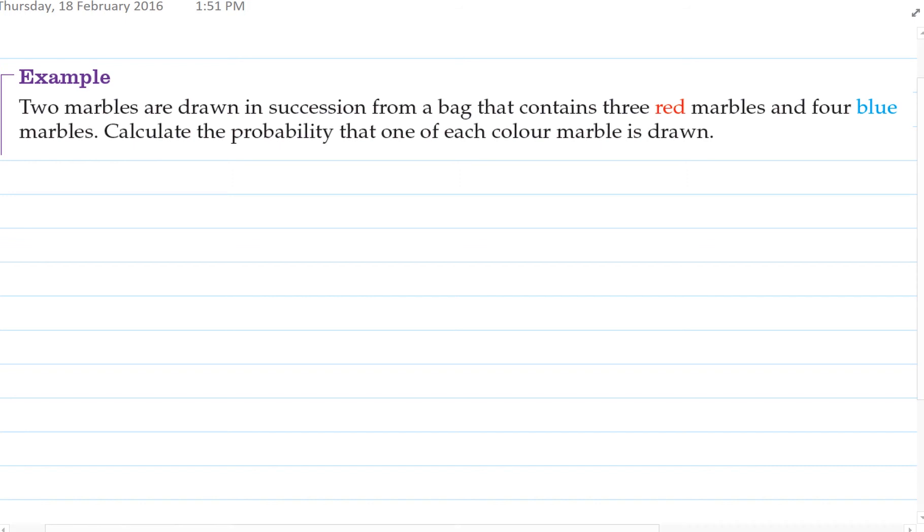So in this example, we're looking at two marbles being drawn from a bag that has three red and four blue. Calculate the probability that one of each color marble is drawn. So our first marble could be red or blue, and the probabilities are three out of seven and four out of seven respectively.